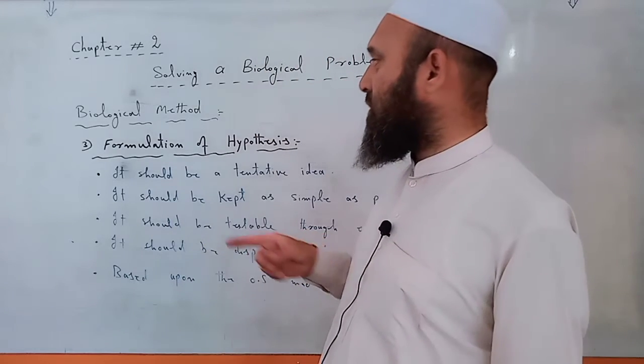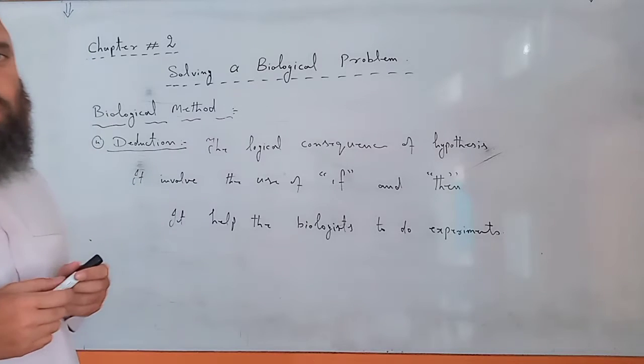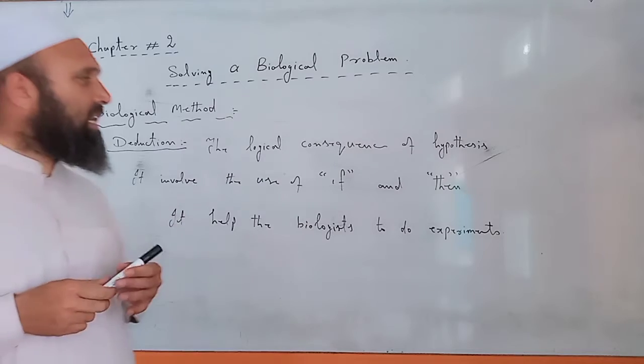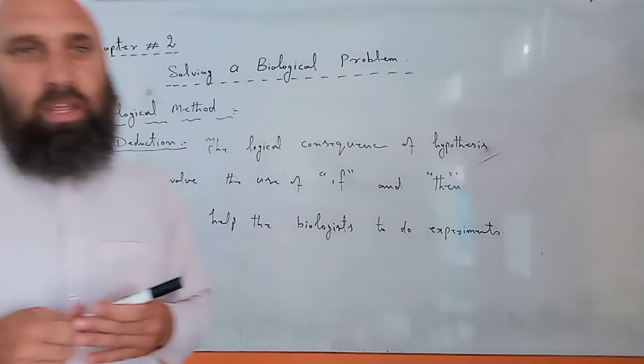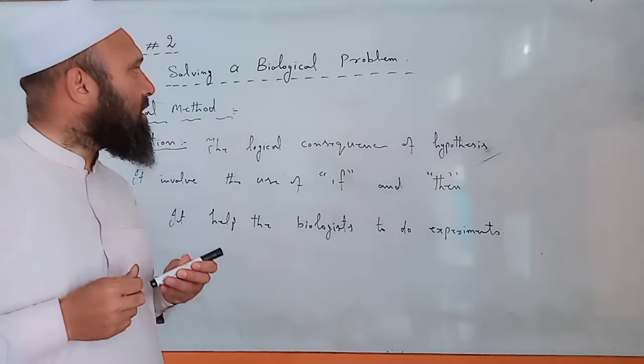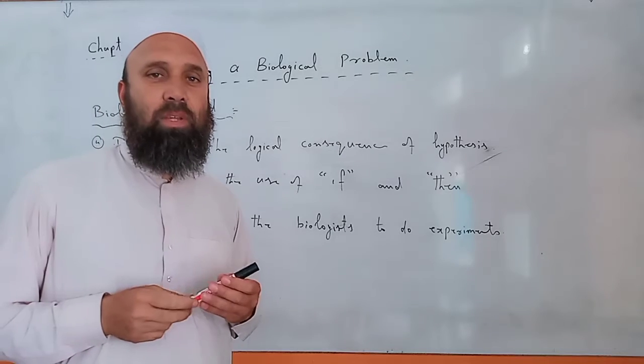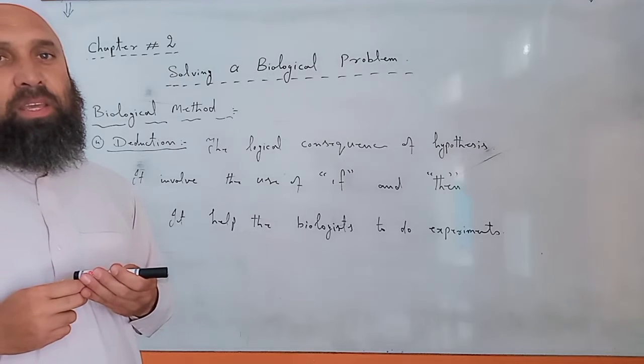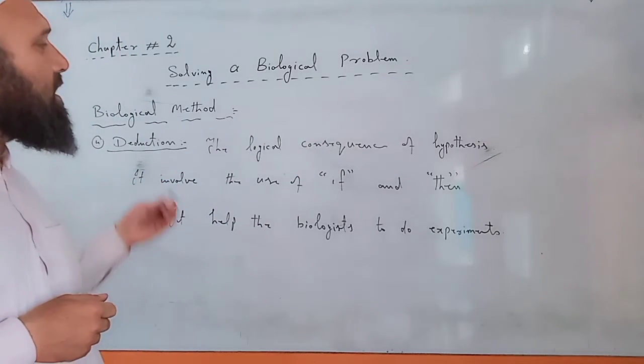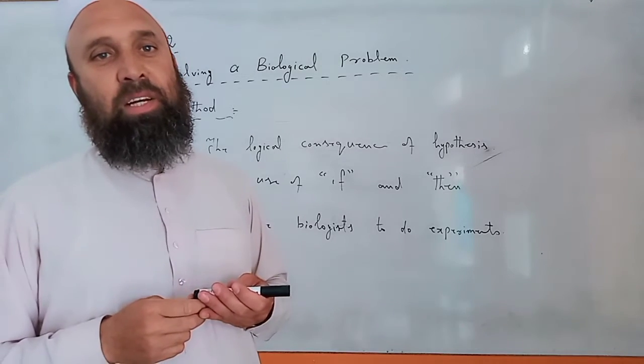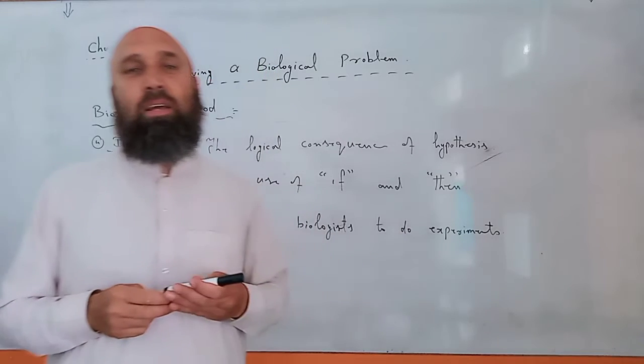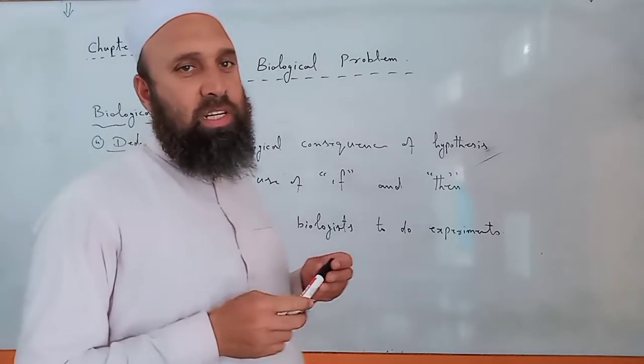This was about formulation of hypothesis. The fourth step of biological method of study is deduction. Deduction is the logical consequence of hypothesis, and it involves the use of 'if' and 'then'. For example, in 1878, when French army physician Leverand made a hypothesis about malaria disease, he said that plasmodium is the cause of malaria.